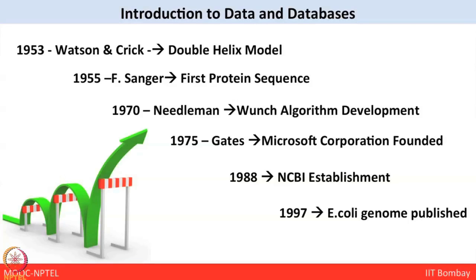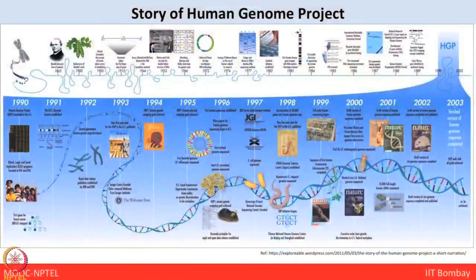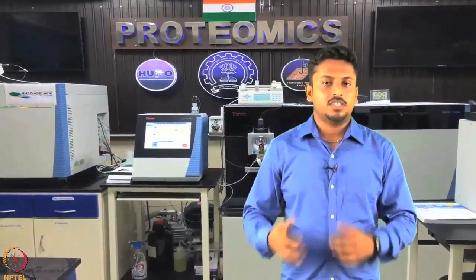In 1975, a major breakthrough happened when Microsoft Corporation was founded by Bill Gates and Allen. Further, in 1988, the National Center of Biotechnology Information — NCBI — which we are all familiar with, was established. In 1997, the genome of E. coli was published. After that, the biggest breakthrough was the publication of the Human Genome Project around 2004, after which the amount of data generated was huge and is still growing.